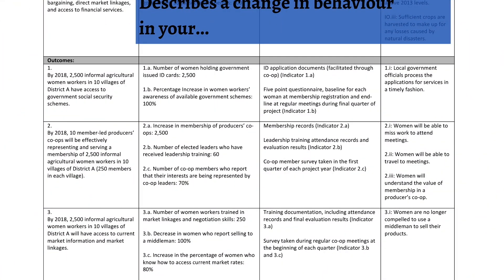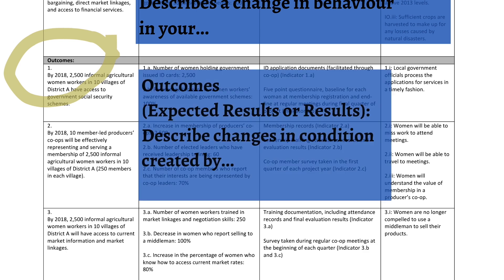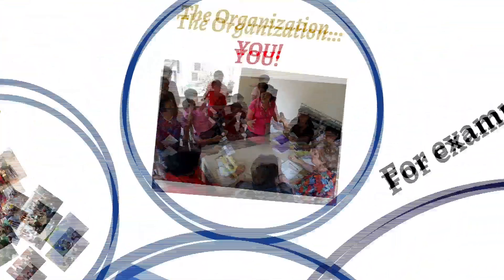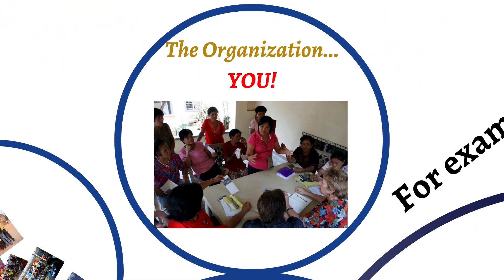And then outcomes. Outcomes are also sometimes called expected results or results. And they describe changes in condition. Not behavior this time, but changes in condition that are created by you, by the organization who is doing the project work.